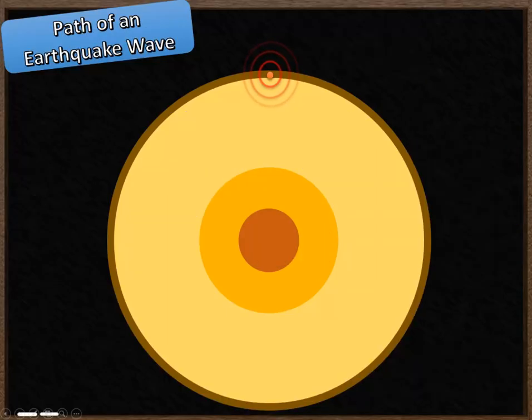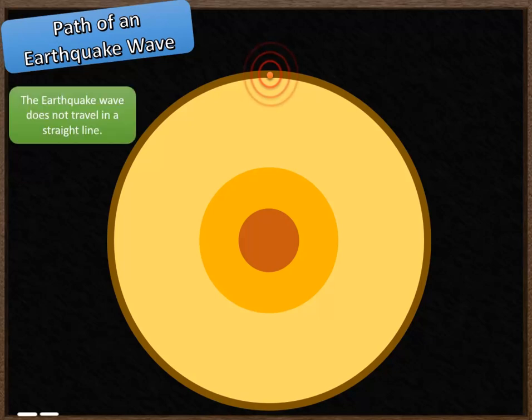We're now going to think about the path that an earthquake wave takes as it travels through the Earth. Marked on here is the epicentre of the earthquake wave. We're going to look at an S wave, but this holds true for P waves as well. So as the wave is sent out from the epicentre, you'll notice that it doesn't travel in a straight line.